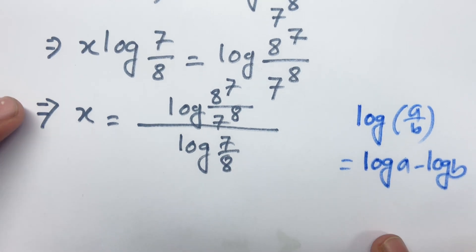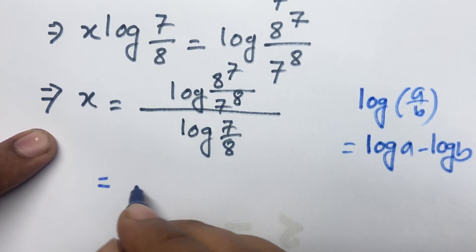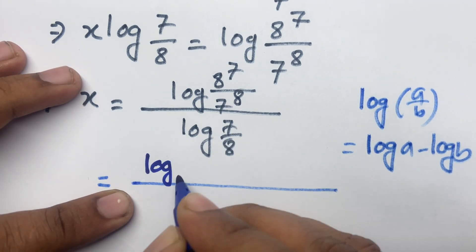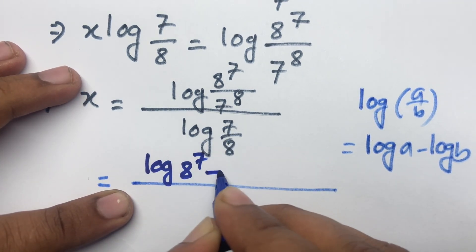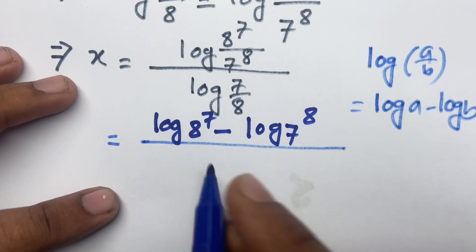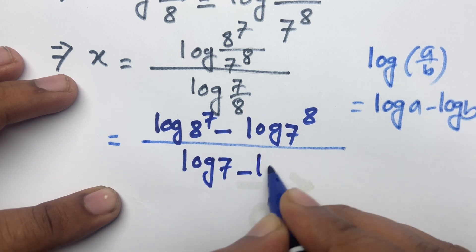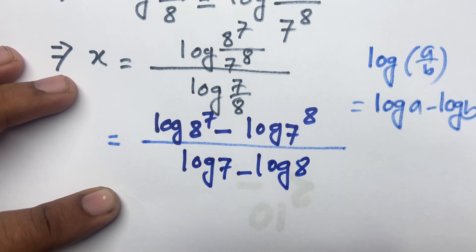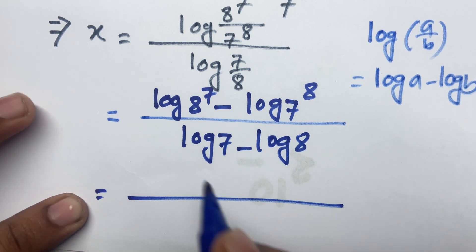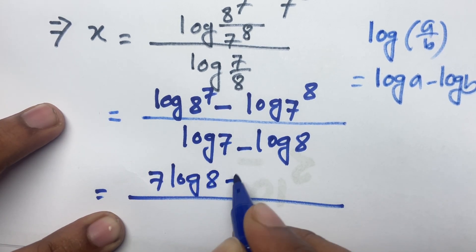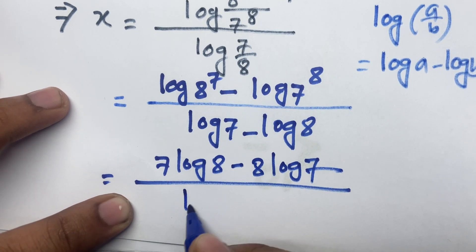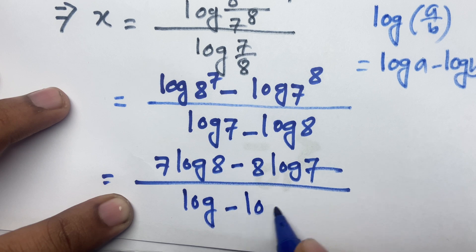Following this formula, I can write x equals log of 8 to the power 7 minus log of 7 to the power 8, all over log 7 minus log 8. This simplifies to 7 log 8 minus 8 log 7, over log 7 minus log 8.